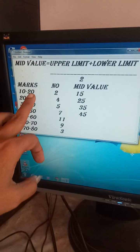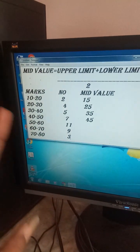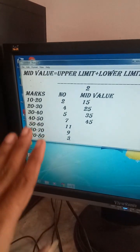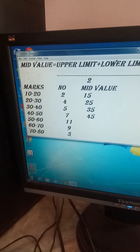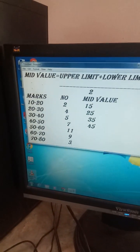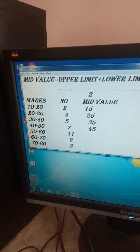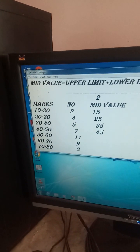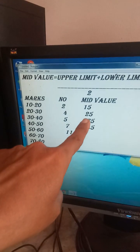If you look at the series, this is upper limit and this is lower limit. Or you can say lower limit plus upper limit by 2. 10 plus 20 equals 30, 30 by 2 which is 15. 20 plus 30 equals 50, 50 by 2 which is 25.